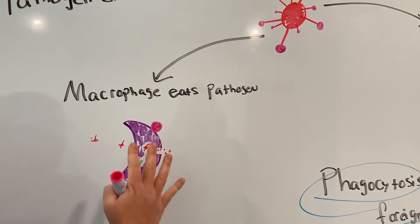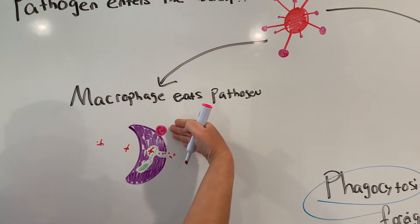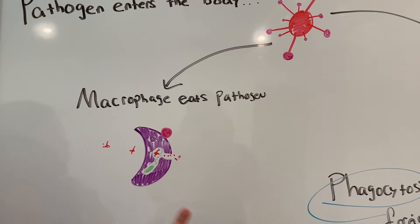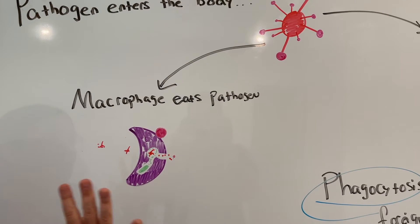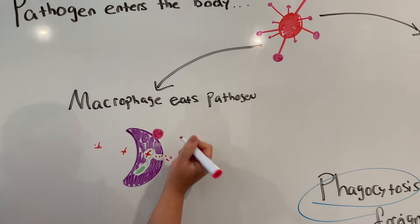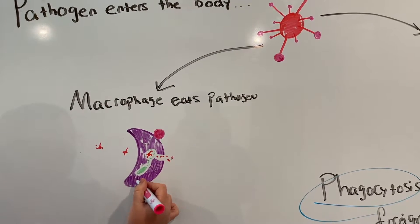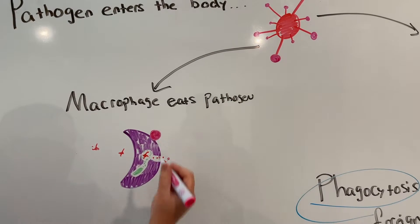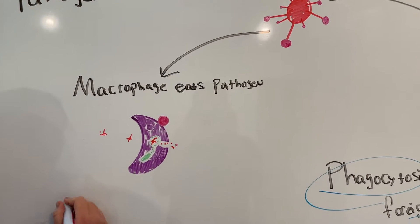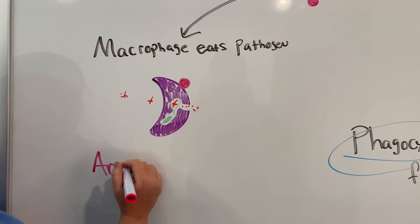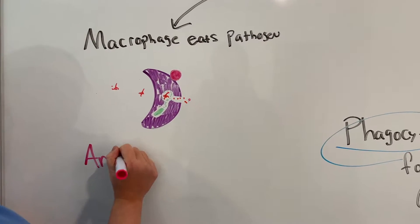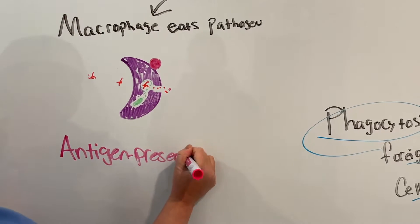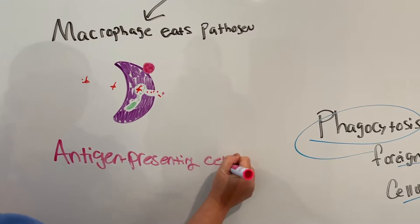Other cells can look at the antigen and be like, oh, there's a problem here — this is an invader, this is not supposed to be in the body. Because the macrophage displays the antigen on the surface of its cell, it's actually going to be called an antigen presenting cell, or APC.